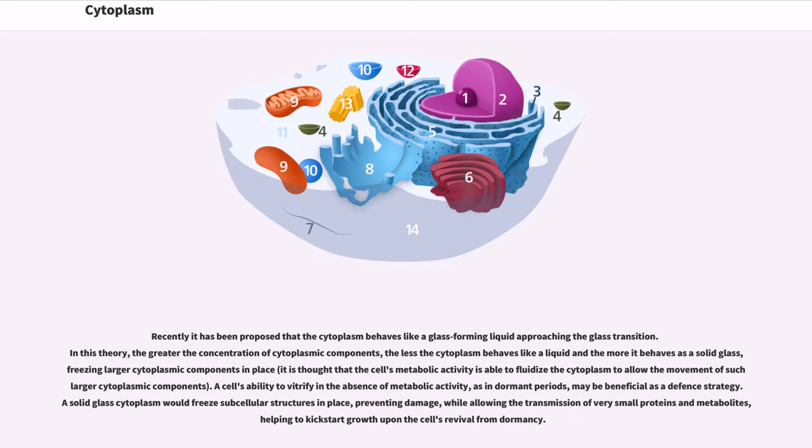Recently it has been proposed that the cytoplasm behaves like a glass-forming liquid approaching the glass transition. In this theory, the greater the concentration of cytoplasmic components, the less the cytoplasm behaves like a liquid and the more it behaves as a solid glass, freezing larger cytoplasmic components in place.